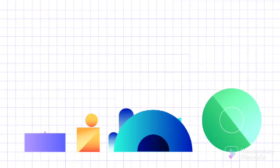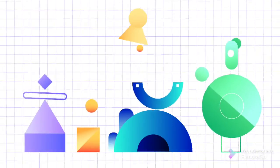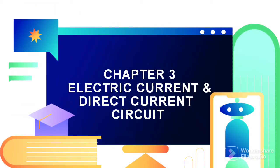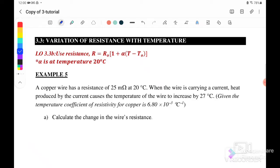Welcome back to my channel. Today we will continue with chapter 3, electric current and direct current circuit. In this video, we are going to discuss section 3.3: variations of resistance with temperature.